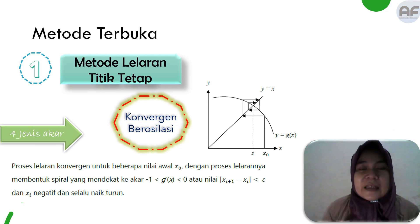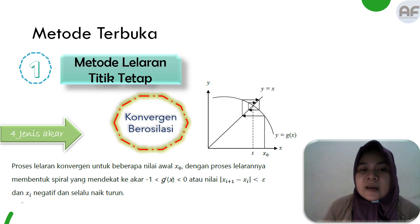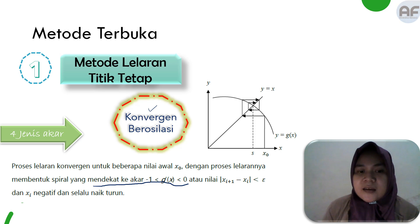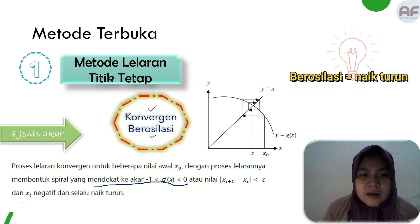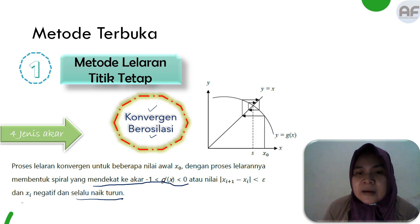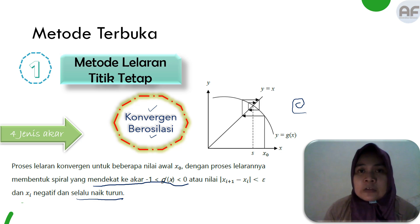Selanjutnya ciri dari convergent berosilasi. Convergent cirinya mendekati ke akarnya, sedangkan berosilasi cirinya adalah nilainya selalu naik turun. Dilihat pada grafiknya, tanda panahnya berputar seperti membentuk spiral, seperti obat nyamuk. Artinya nilai akarnya kadang naik kadang turun.